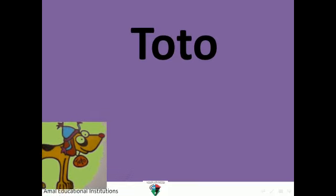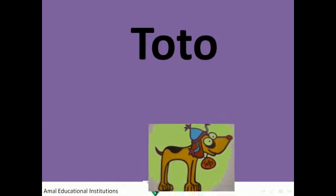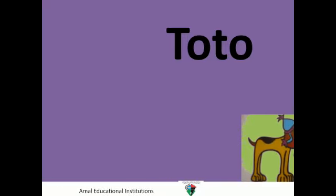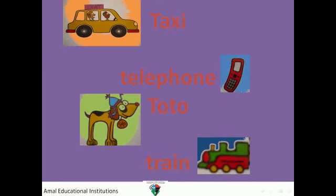Toto! Toto is a word that starts with the letter T. Toto is the name of the dog — the dog's name is Toto, and it starts with the letter T. So our T words are: Taxi, Telephone, Toto, and Train.